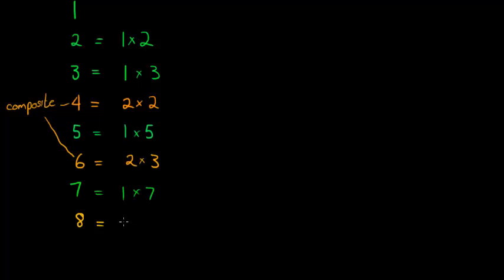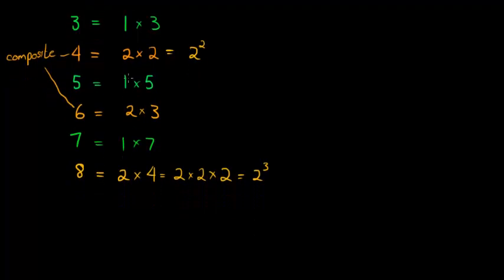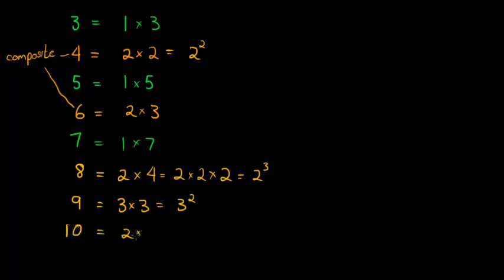8 can be written as 2 times 4, and 4 can again be written as 2 times 2, so 8 is 2 times 2 times 2 — we can write 2 squared times 2, or 2 cubed. So 8 is also composite. How about 9? You might think that's prime, but 9 can be written as 3 times 3, or 3 squared. All composite numbers can be written as the product of primes — this is called prime factorization. 10 can be written as 2 times 5.